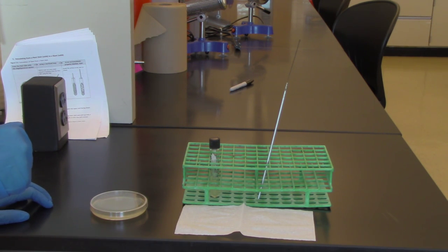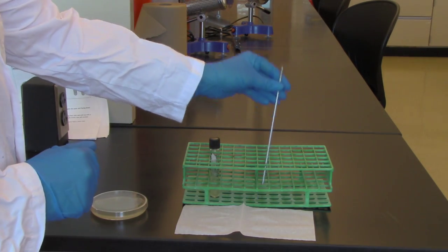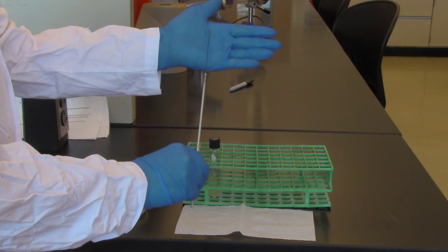This video shows how to inoculate a slant starting with culture on a petri dish. The tool I'm going to use here is an inoculating loop.